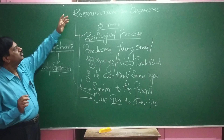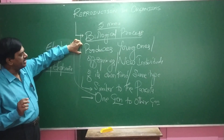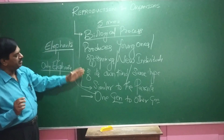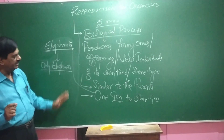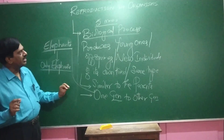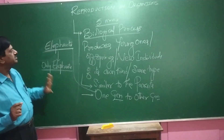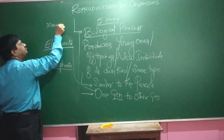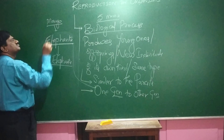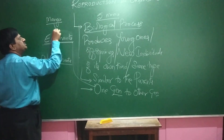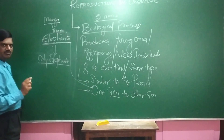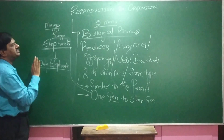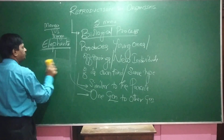To summarize: reproduction is a biological process to produce young ones of its own kind and they should resemble the parents. This keeps the race passing from one generation to another to continue life. For example, a mango plant produces mango plants only, because it should continue its generation or its race.